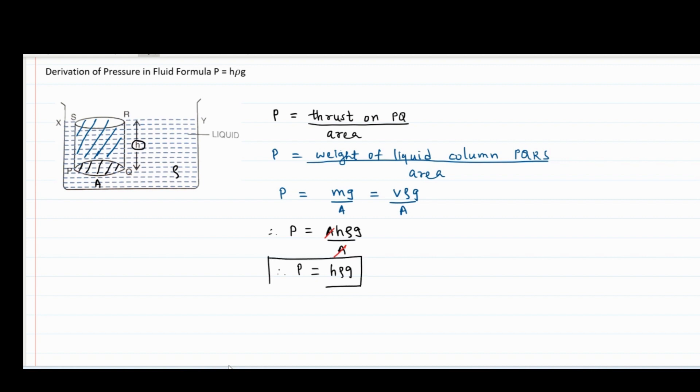This is the formula to calculate the pressure exerted by liquid at any depth H. Here we can say H is the depth from free surface of the liquid, rho is density of liquid, and g is acceleration due to gravity.